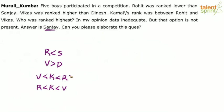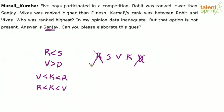So who was ranked highest? The 5 persons are Rohit, Sanjay, Vikas, Kamal, and Dinesh. We can definitely say Rohit was not ranked highest because Rohit was ranked lower than Sanjay. Dinesh cannot be the highest because Dinesh was ranked lower than Vikas. And Kamal cannot be the highest because Kamal is ranked between Rohit and Vikas. So the answer should either be Sanjay or Vikas.